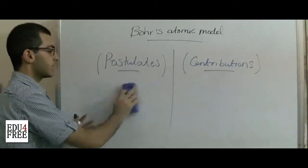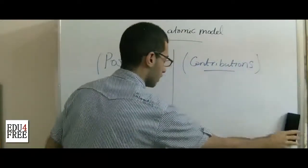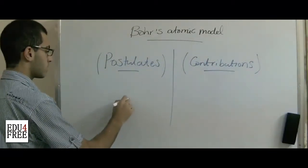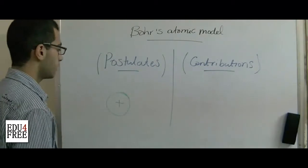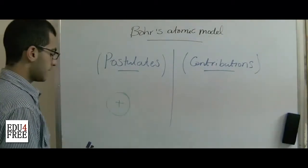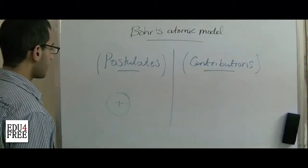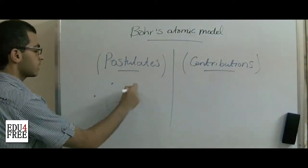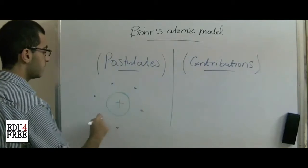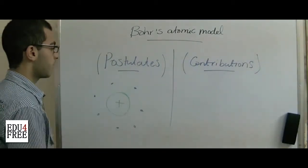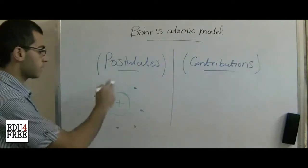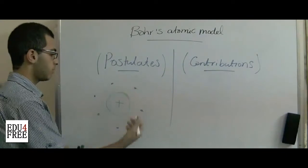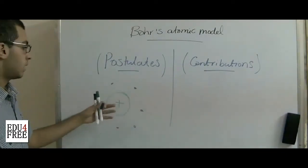Bohr said that in the atomic model there is a large positively charged mass at the center of the atom, which is the nucleus. He said that there are electrons found around the nucleus which are negatively charged, and that the amount of negative charge of the electrons equals the amount of positive charge in the nucleus, which makes the atom neutrally charged.